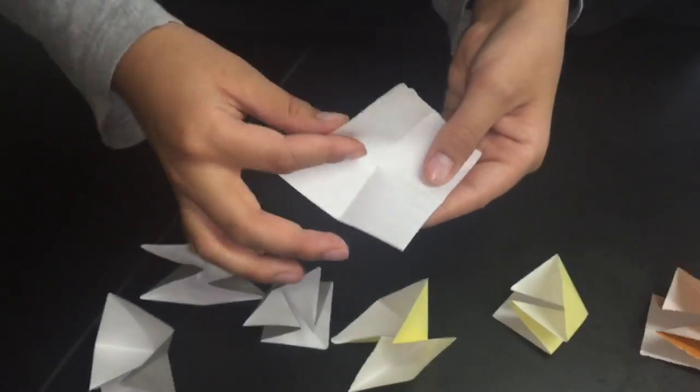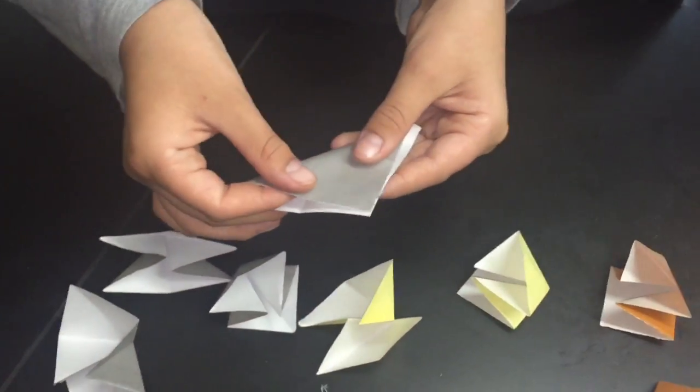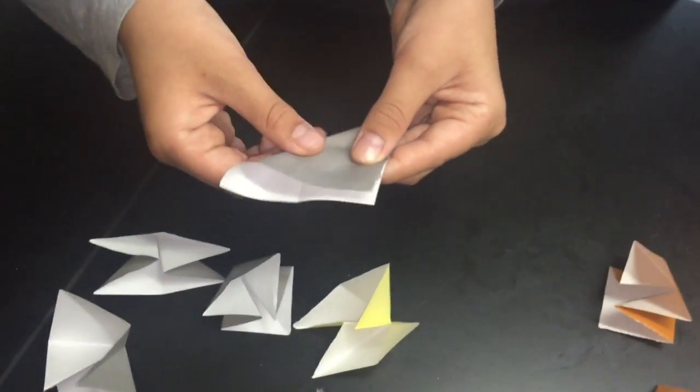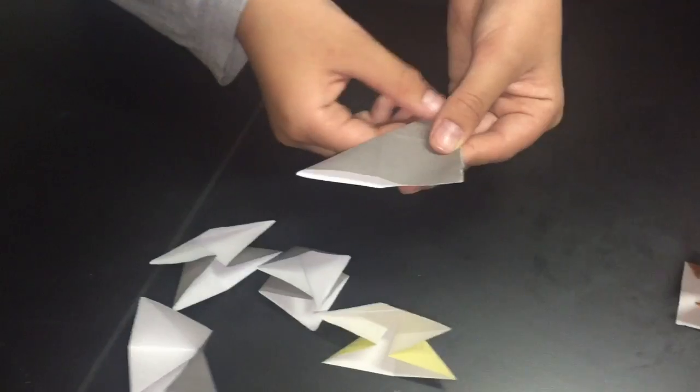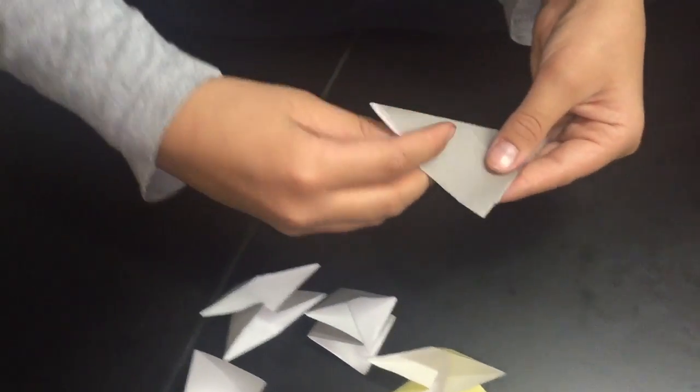For the next step, you need to make six of these. Take a paper and fold it so that the corners meet. You should have a triangle.